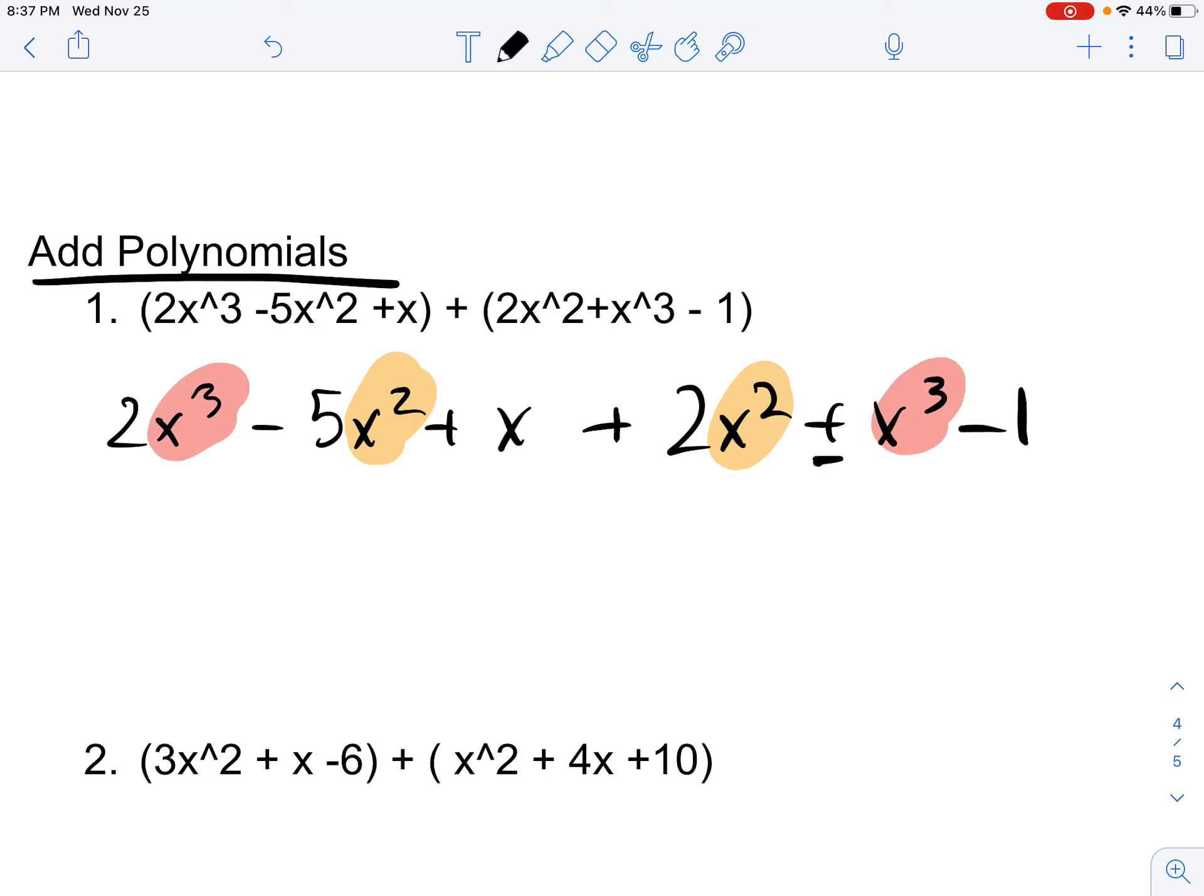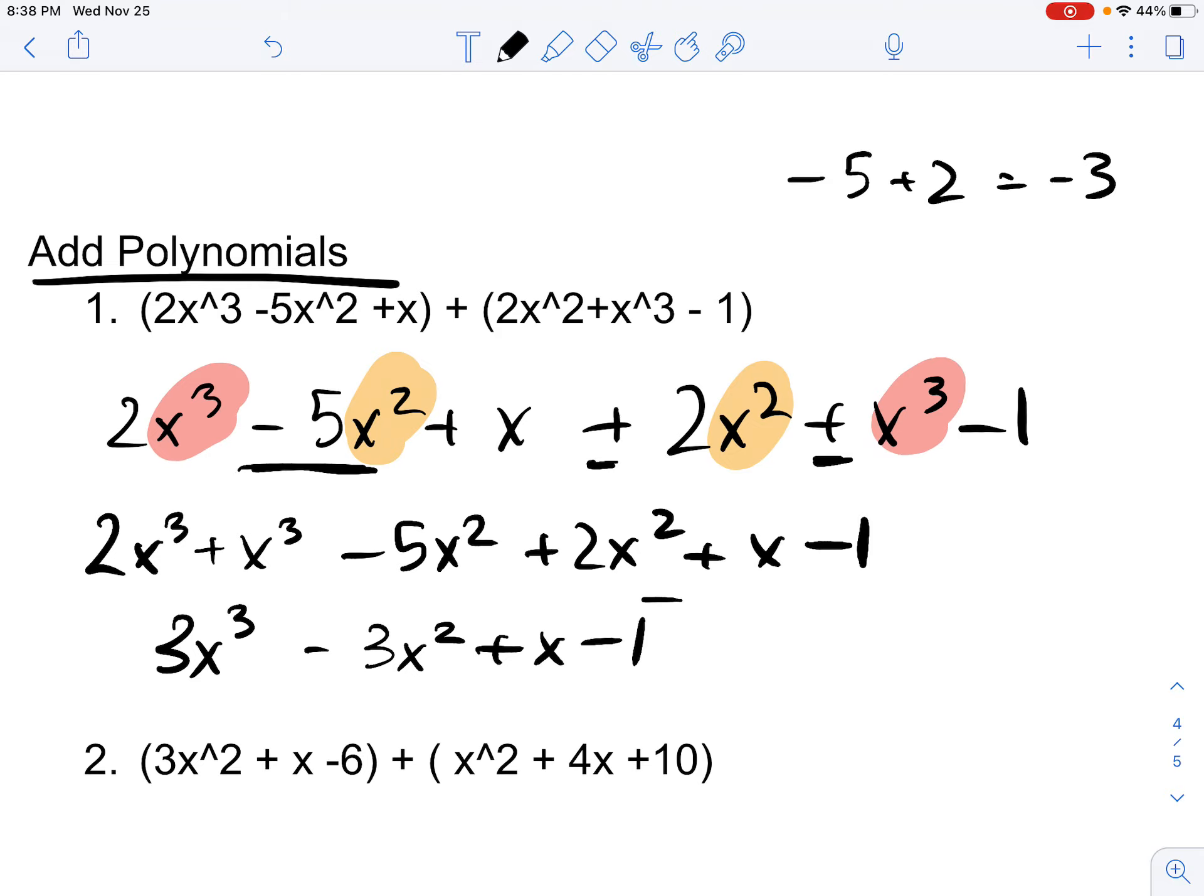So what do we do? Since they are like terms, we add them. In this case, since this is positive, this is positive. Since this is negative, we're going to be subtracting 2 out of negative 5, or we will be adding 2 out of negative 5. So we reformat the equation: 2X cubed plus X cubed minus 5X squared plus 2X squared plus X minus 1. Now, what is 2X cubed plus X cubed? 3X cubed. What is minus 5X squared plus 2X squared? That's just minus 5 plus 2. Well, that's just negative 3. So you do minus 3X squared plus X minus 1. And that's your answer.